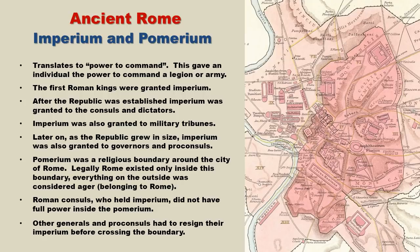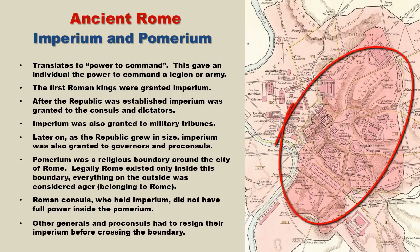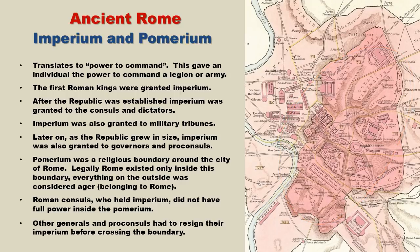So how does Pomerium come into play? Pomerium was the religious boundary around the city of Rome, which you can see in this diagram shaded in dark red. Legally, Rome only existed inside this boundary. Everything on the outside was referred to as Ager. Rome itself only existed within this boundary.